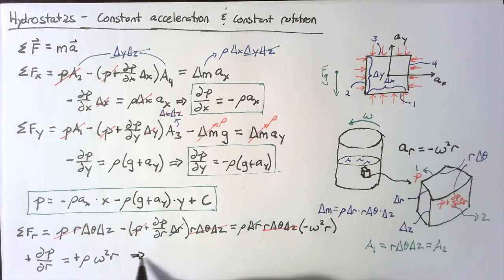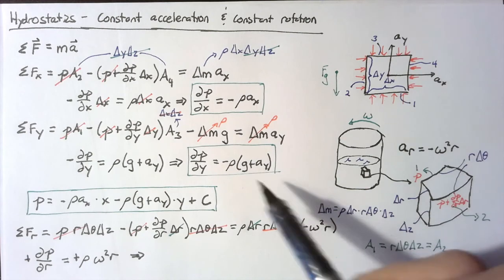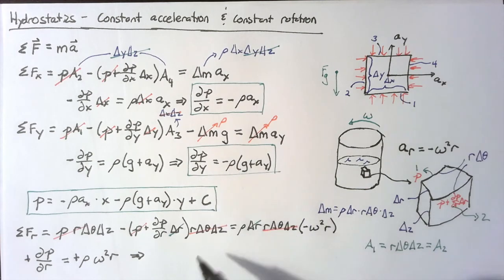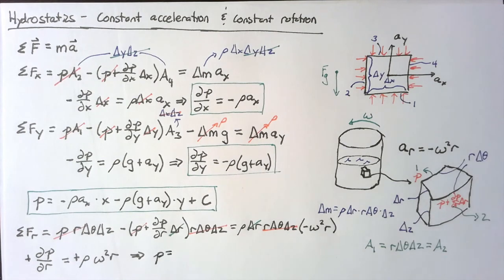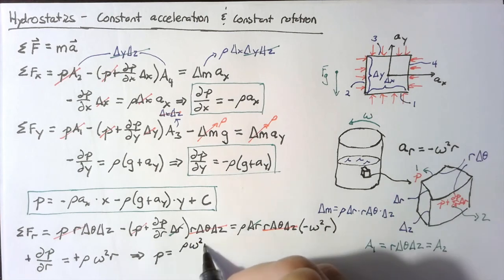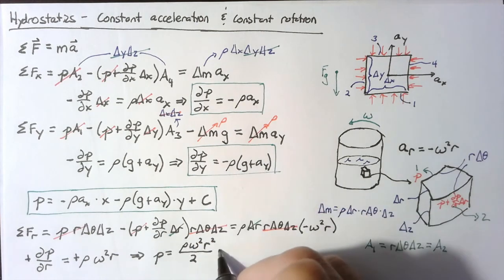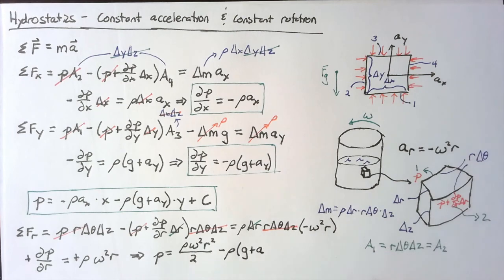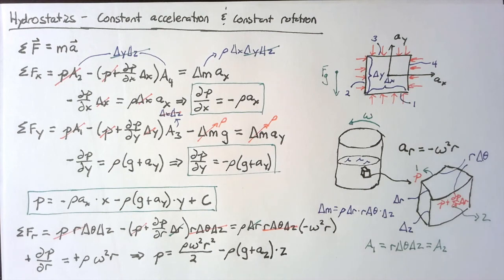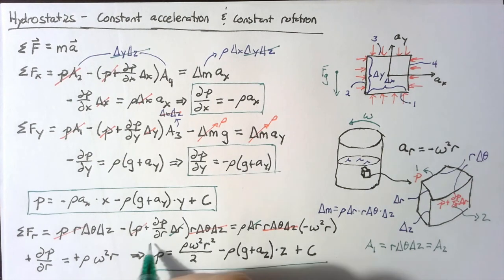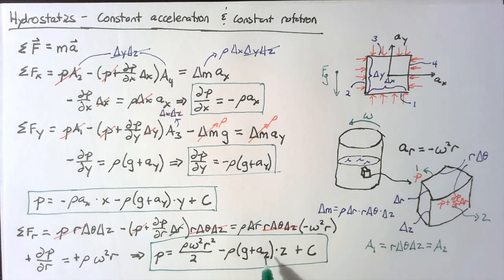We use this pressure variation in r and copy the pressure variation in y, except we change to the z direction since we're using cylindrical coordinates. Splicing those two together, we end up with pressure equal to rho omega squared times r squared over two, minus rho(g + a_z) times z, and then finally we add our constant. So for constant rotation with a little bit of vertical acceleration, we can come up with a pressure distribution as well.